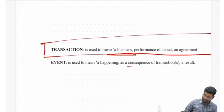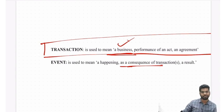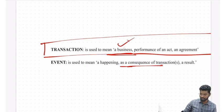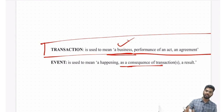An event is a consequence of a transaction. Business is purely for monetary purpose. Performance of an act or an agreement can be for monetary or non-monetary purposes. An event is a consequence of a transaction.